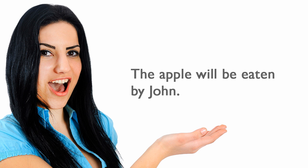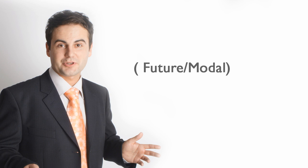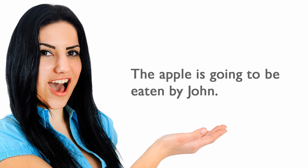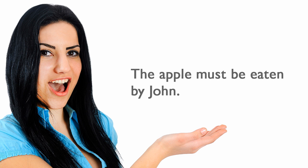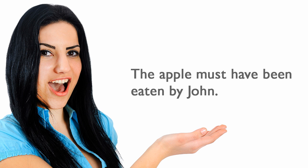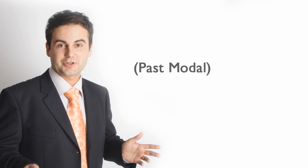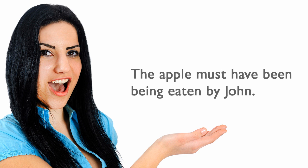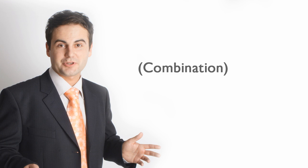The apple will be eaten by John. (Future/modal passive.) The apple is going to be eaten by John. (Future/modal passive.) The apple must be eaten by John. (Modal passive.) The apple must have been eaten by John. (Past modal passive.) The apple must have been being eaten by John. (Combination passive.)